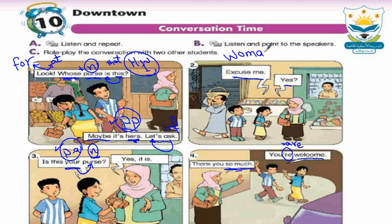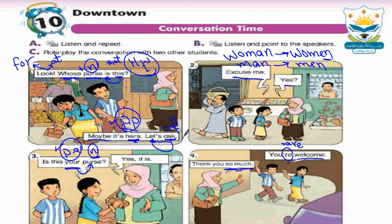Also write the word 'woman,' which means امرأة. The plural of 'woman' is 'women.' 'Man' means الرجل, and the plural is 'men.' 'Ask' means يسأل. 'Happy' means سعيد أو مبسوط, and the opposite of happy is 'sad,' meaning حزين. 'Think' means يعتقد. 'Found' is the past tense of 'find,' and 'found' means وجده.